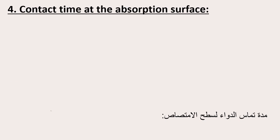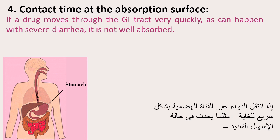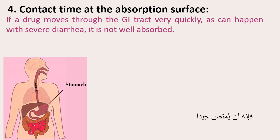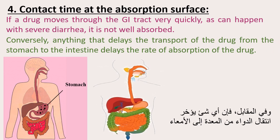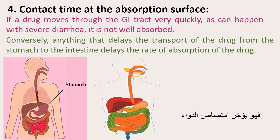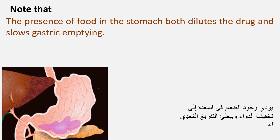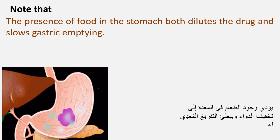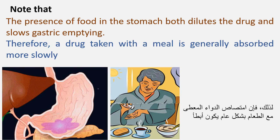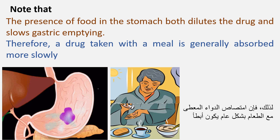Contact time at the absorption surface. If a drug moves through the GI tract very quickly, as can happen with severe diarrhea, it is not well absorbed. Conversely, anything that delays the transport of the drug from the stomach to the intestine delays the rate of absorption of the drug. Note that the presence of food in the stomach both dilutes the drug and slows gastric emptying. Therefore, a drug taken with a meal is generally absorbed more slowly.